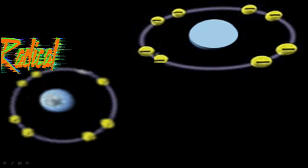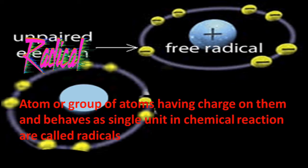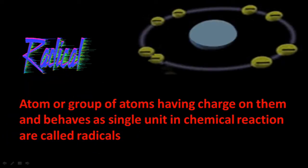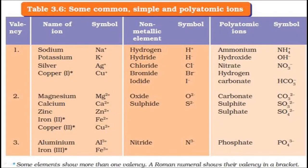Every compound is made up of radicals, and we can define radicals as an atom or group of atoms having a charge on them that behaves as a single unit in a chemical reaction — these are called radicals. Some important radicals are given here, including simple, compound, or fully atomic ions. The name and symbol of these radicals are given, and these are most essential to write the molecular formula of the compound.